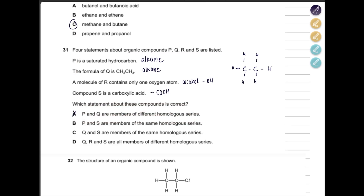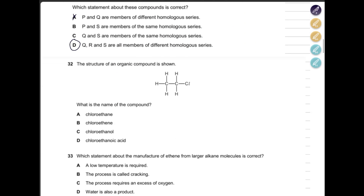Now checking the statements: P and Q are members of a different homologous series — not correct, they're both alkanes. P and S are members of the same homologous series — no, alkane vs. carboxylic acid. Q and S — same issue. Q, R, and S are from different homologous series — alkane, alcohol, and carboxylic acid. The answer is D.